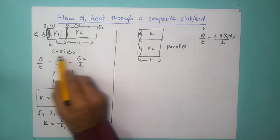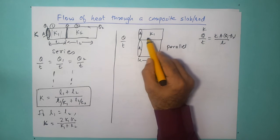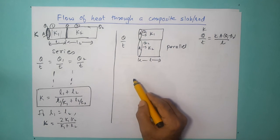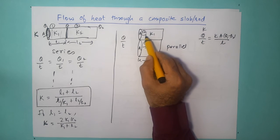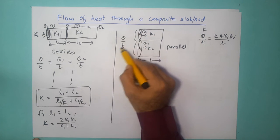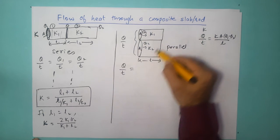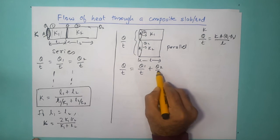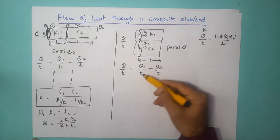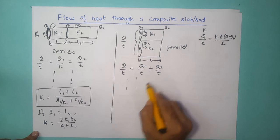Now let's do a similar analysis for the parallel connection. In this case, the total rate of heat transfer Q by T will be split between the two rods because they have different thermal conductivities K1 and K2, allowing heat to pass at different rates. The sum of Q1 and Q2 equals the total heat transfer. So the equation is: Q by T = Q1 by T + Q2 by T. Again using temperatures theta 1 and theta 2, you can arrive at the equivalent thermal conductivity.